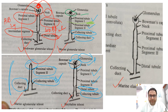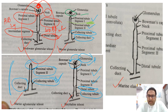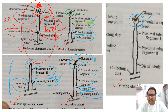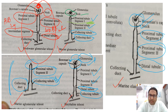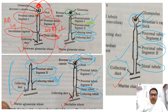In marine elasmobranchs, the glomerulus is present, the Bowman's capsule is present, a neck segment is present, and proximal tubule 1, proximal tubule 2, the distal tubule, and the collecting duct can all be seen.